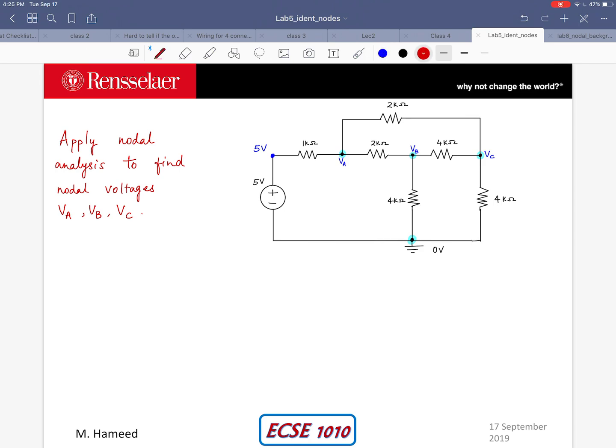So let's first apply Kirchhoff's current law at node A. Now as I pointed out in the earlier video I'm assuming that all the currents are going out of every node. So just for node A, let me call these I1, I2, I3 and if you do this for the other nodes you will see a pattern.